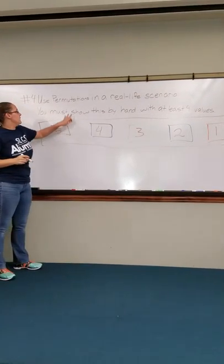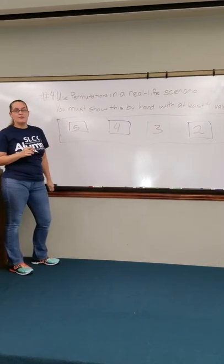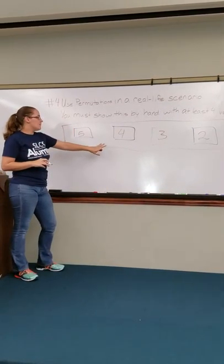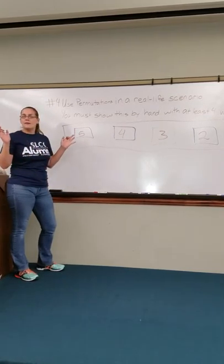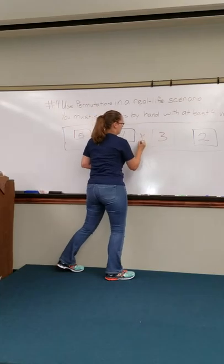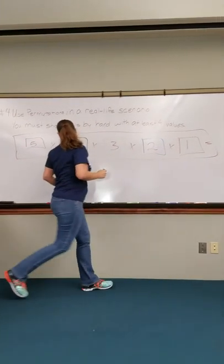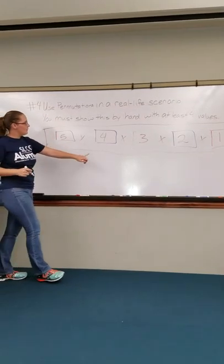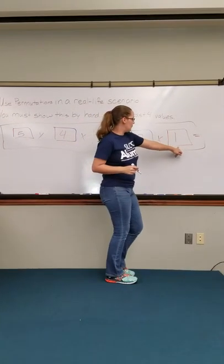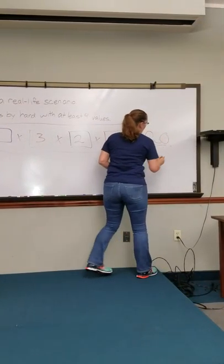Now, permutations means how many ways can we set up these five different books in all kinds of different orders. Since we have five different books, it's very simple. All we're going to do is multiply them. We're going to do 5 × 4 × 3 × 2 × 1, and that's going to equal 120.